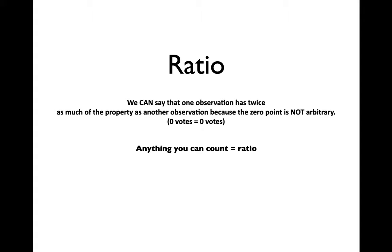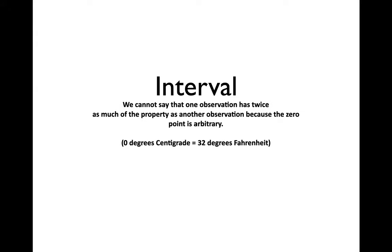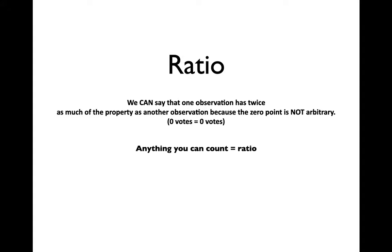To differentiate between interval and ratio data, you have to seriously think about what zero is doing. Is zero just a numeral assigned to something substantively important — like degrees Celsius, where zero arbitrarily means where water freezes? Then you have interval data. Or does zero mean the absence of the thing you're trying to measure — like zero votes, zero coalition partners, zero candidates? Then you've got ratio level data.